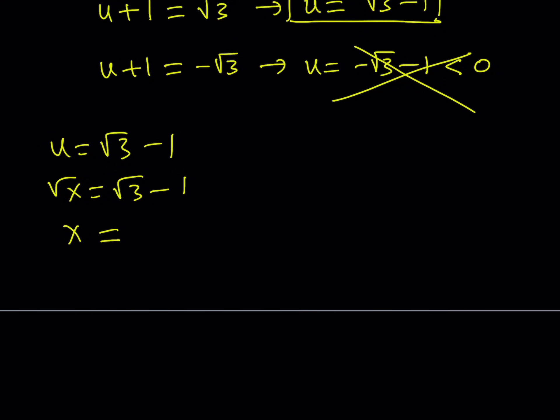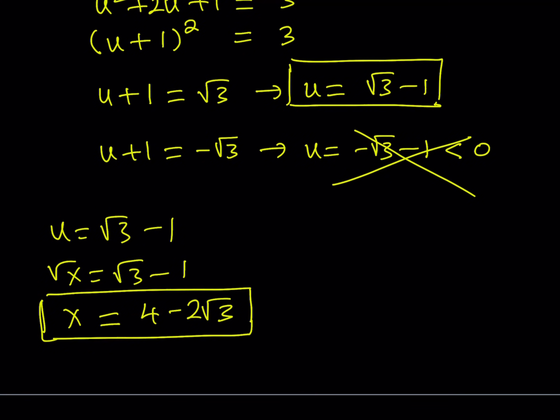If you're trying to find x, you have to square both sides. And that is going to give you 3 plus 1, which is 4 minus 2 root 3. So, this is our x value and the only x value that works here for this equation.